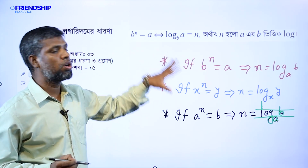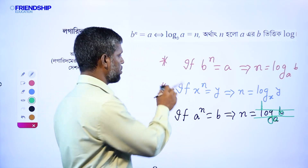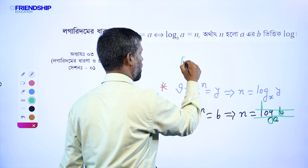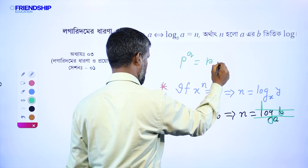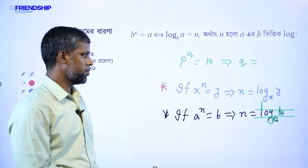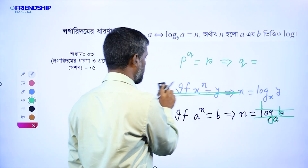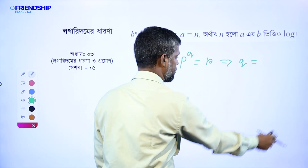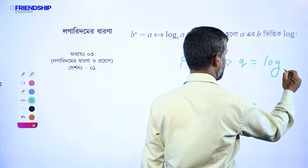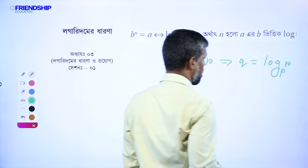There are three units from the sub-basis. I say p to the power q is equal to r. Let me tell you: p to the power q is equal to r, then q is equal to what? q is equal to log p base r.